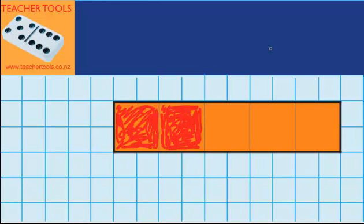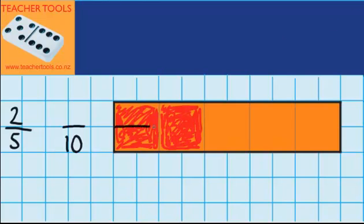Now let's see if we can use what we've just learned to change a fraction into a decimal. Over here you can see I've got two fifths — two fifths are shaded in red. I want to change this fraction two fifths into a decimal. The problem is I'm not very good at changing fifths into decimals, so I'm going to think about how I could change this fraction so that it becomes tenths, because I'm good at changing tenths into decimals. The denominator will need to be ten, and on my picture the easiest way to do that would be to draw a line right through the middle.